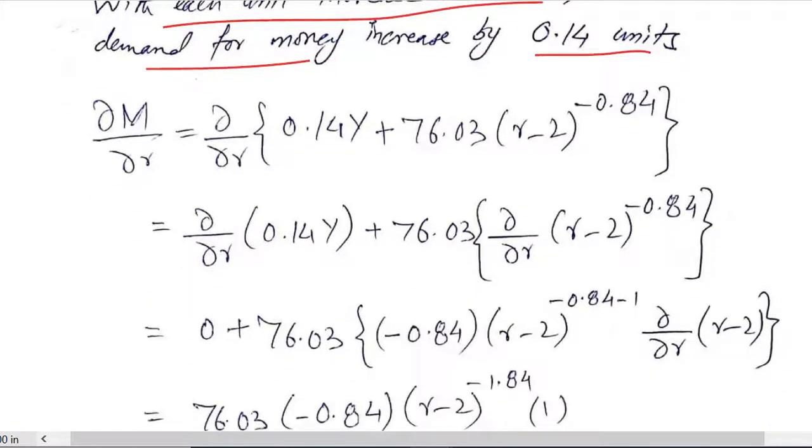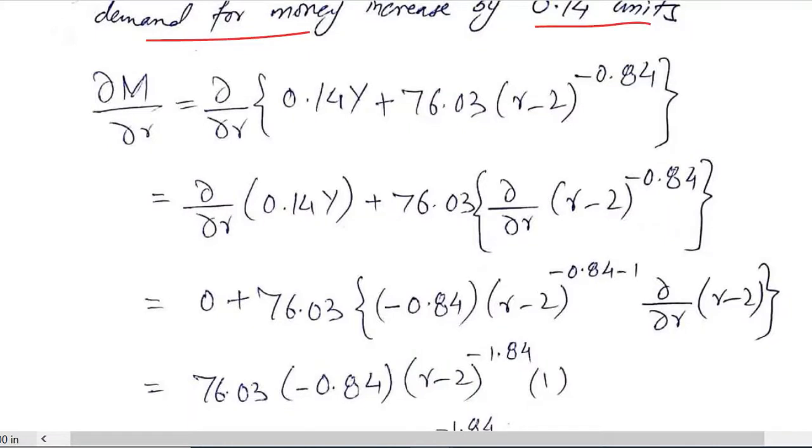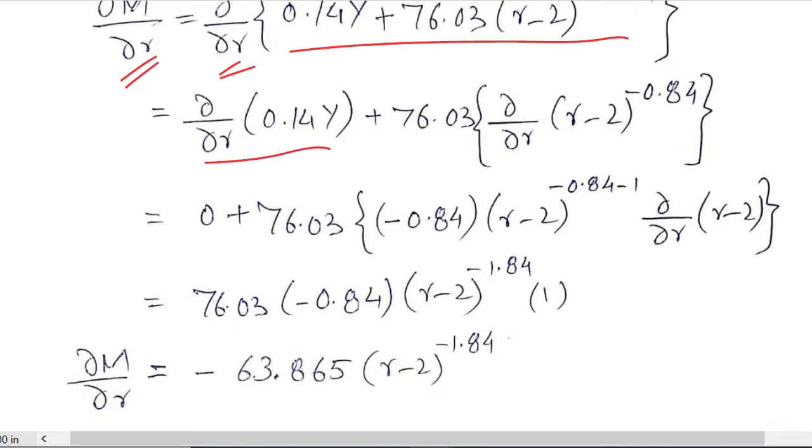Now we talk about the other independent variable which is small r, that is interest rate. When we take the derivative with respect to it, this will be the function that gets differentiated. This is the first term and that is the second term.